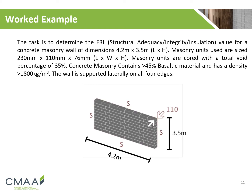To put it all together, we're going to quickly run through a typical FRL evaluation of a masonry wall. The single-leaf concrete masonry wall has dimensions 4.2m x 3.5m. The units used are the standard brick size 230mm x 110mm x 76mm, cored with a total void percentage of 35%, a basaltic content greater than 45%, and a density greater than 1800 kg/m³.